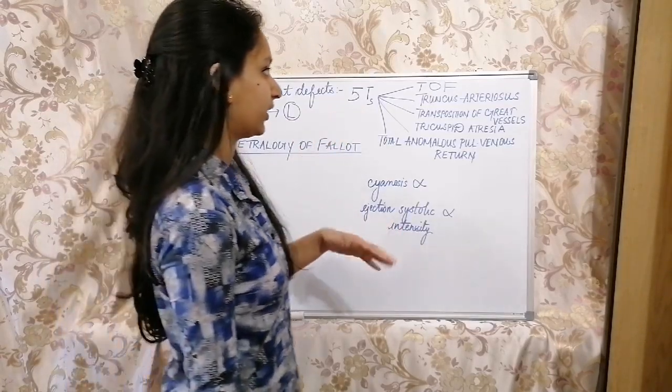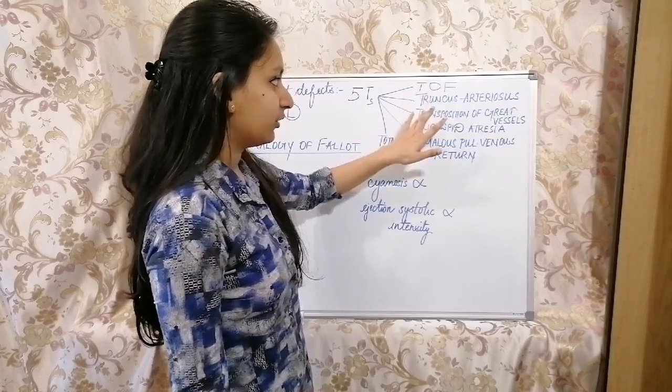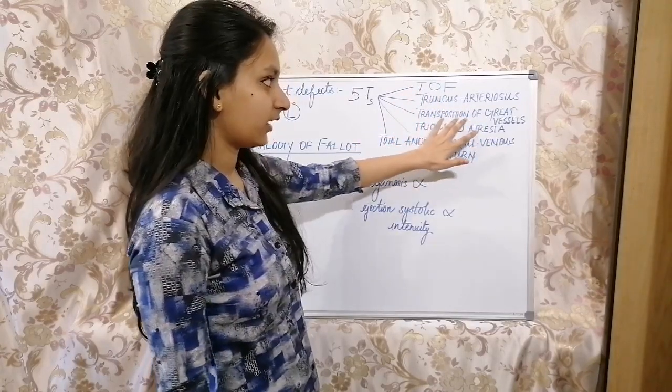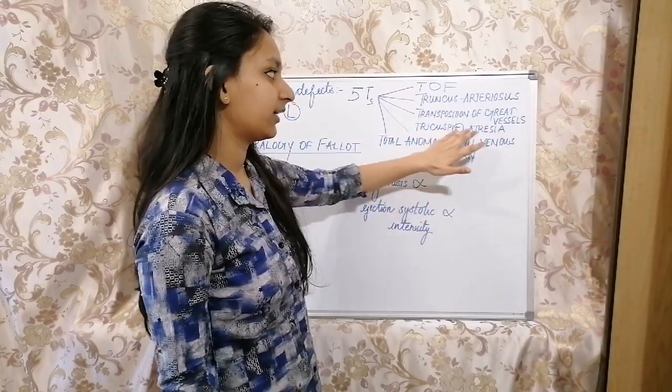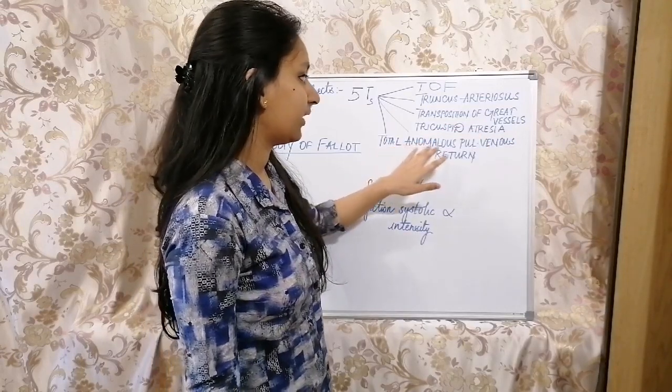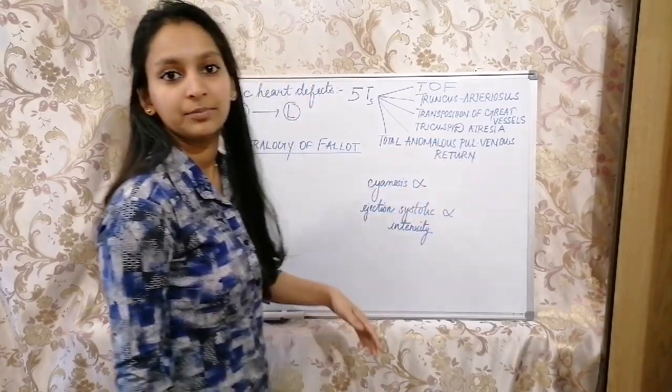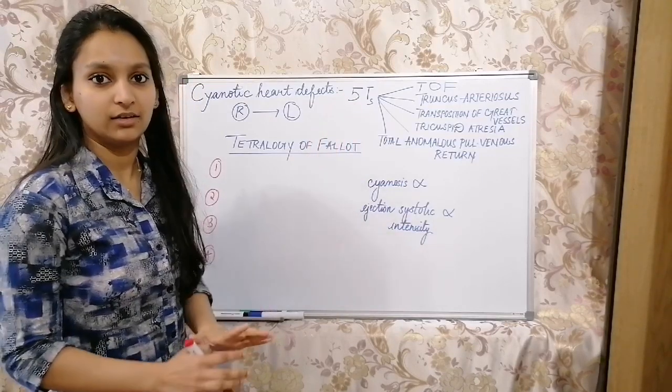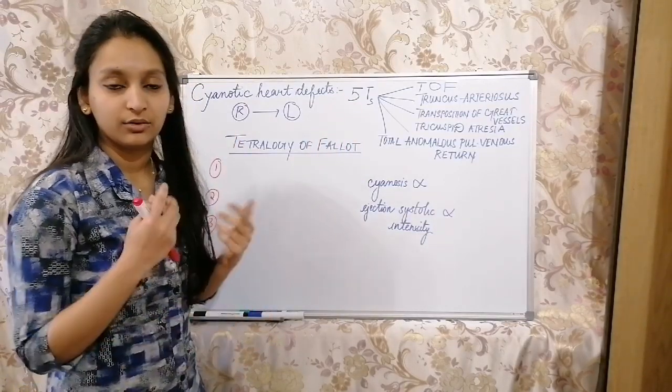Let's see what are those five T's: Tetralogy of Fallot, Truncus arteriosus, Transposition of great vessels, Tricuspid atresia, and Total anomalous pulmonary venous return. These are the five T's which will result in cyanotic heart defect where blood is flowing from the right side of the heart to left side of the heart.